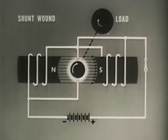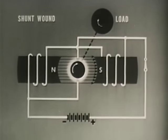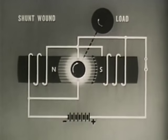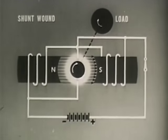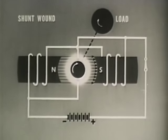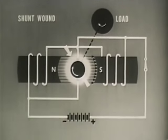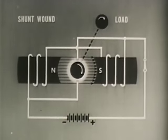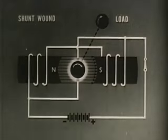In the shunt wound motor, the field coils are connected in parallel directly across the DC input terminals. As more load is applied, the speed of the armature decreases, decreasing the CEMF and increasing the current input. The increase in current input boosts the coupling between the field and armature, increasing the torque and causing the motor to resume approximate running speed. A sudden reduction in load will not damage the motor because the field current is independent of rotor current in the shunt wound motor.